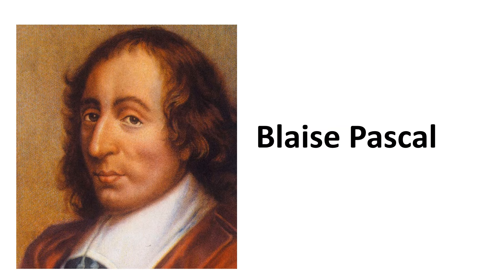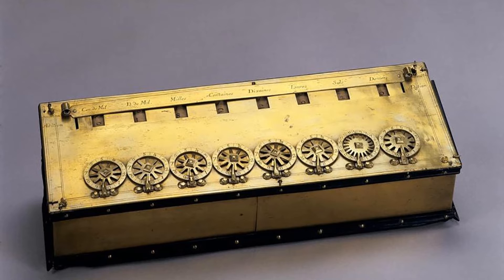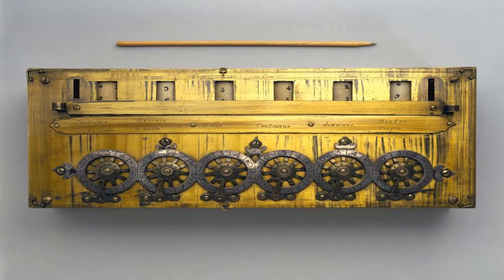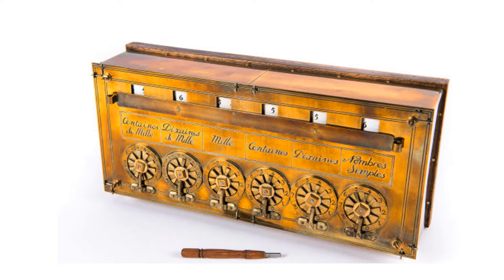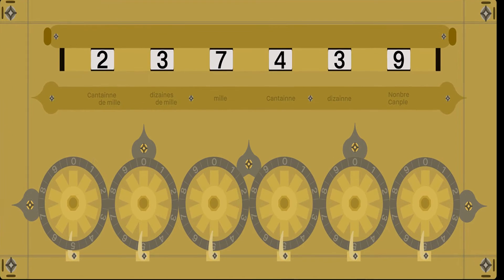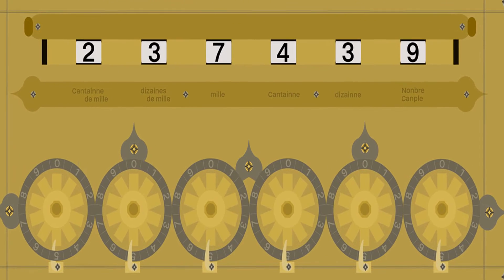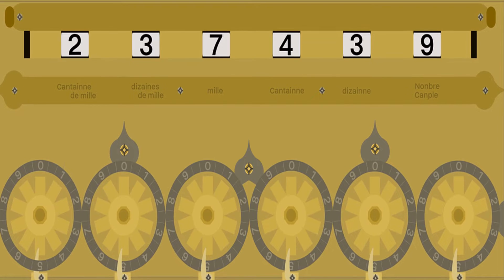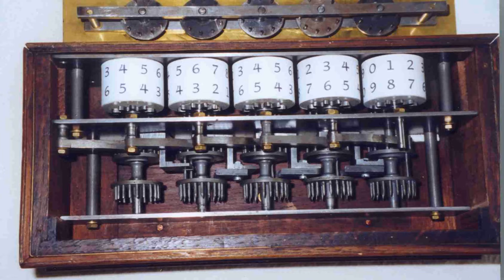Blaise Pascal, a French mathematician, invented a calculating machine called Pascaline in 1642. Pascaline used rotating wheels; each wheel had ten parts having digits from 0 to 9. Calculations were performed by the rotation of wheels. When one wheel completes a rotation, the next wheel moves by one digit. It had a number of small slots for displaying the result, and it could perform addition and subtraction on whole numbers.